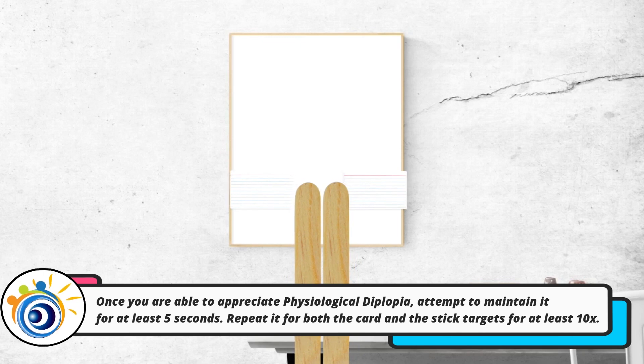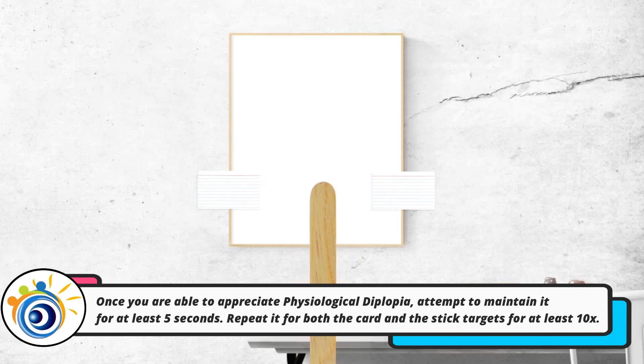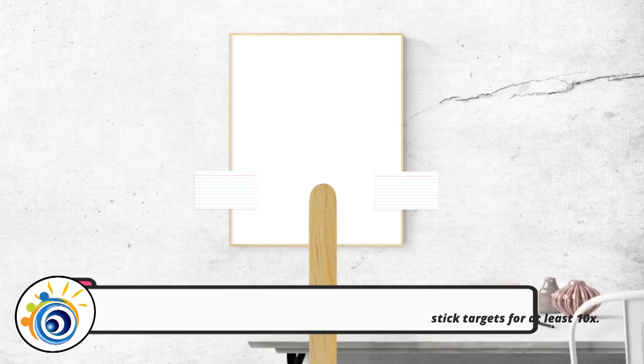Once you are able to appreciate physiological diplopia, attempt to maintain it for at least five seconds. Repeat it for both the card and the stick targets for at least ten times.